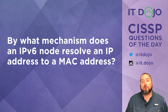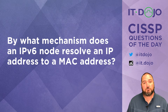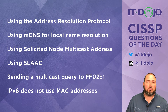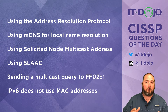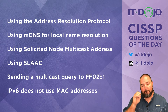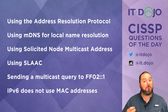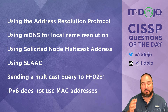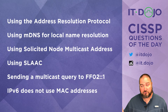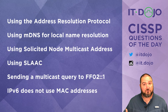By what mechanism does an IPv6 node resolve an IP address to a MAC address? First answer choice — using the Address Resolution Protocol — is wrong. ARP does not exist in IPv6. ARP is a bolt-on protocol to support IP version 4 in an Ethernet network and has been problematic since it has no practical capacity to be secured.